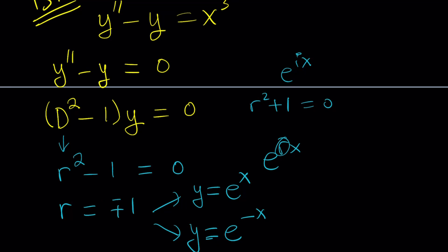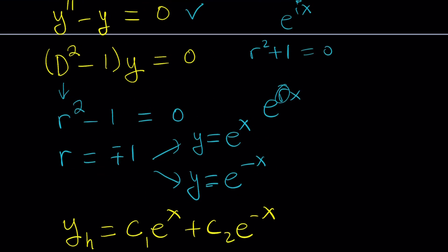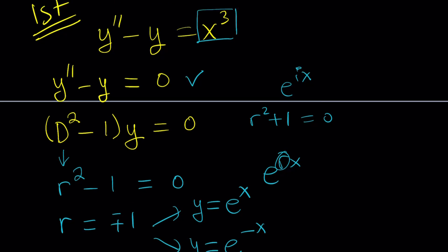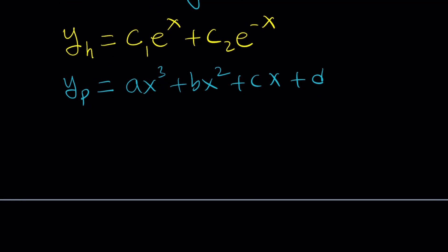We're going to look for the general solution because our equation is non-homogeneous, so we need something to take care of the x cubed term. The homogeneous solution works on the homogeneous part but not on the x cubed, so we need to add a particular solution y sub p. Since we have x cubed on the right-hand side, y sub p is going to be a polynomial: ax cubed plus bx squared plus cx plus d — we're expecting something cubic. Note that this method doesn't work for all cases; for example, if you had secant x on the right-hand side you'd use a different method such as variation of parameters.